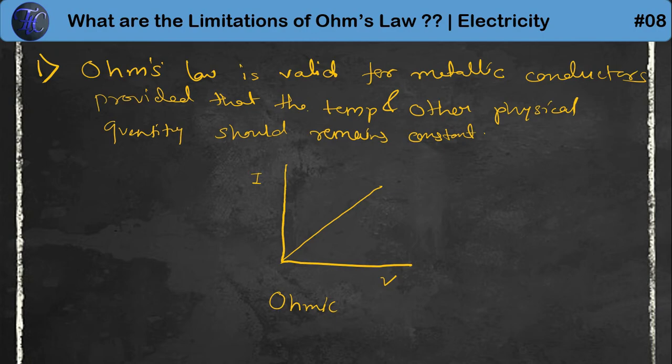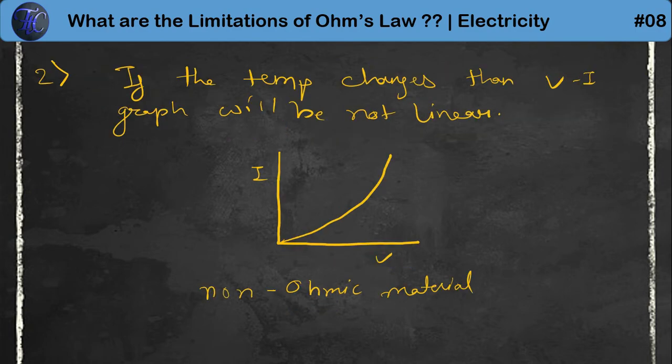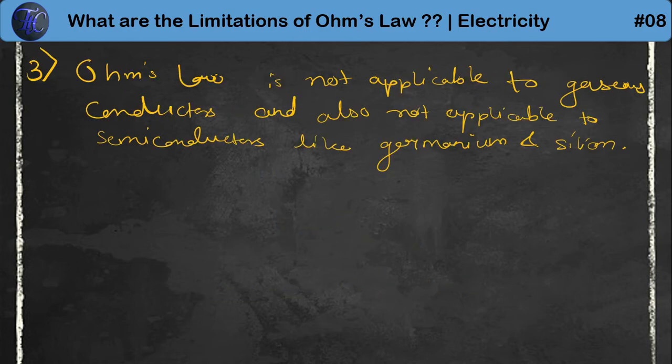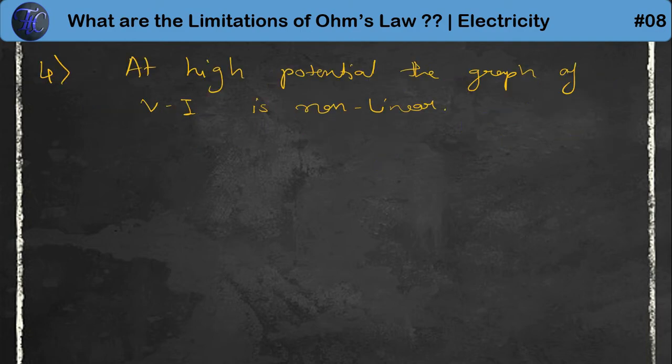Let us do a short recap. First, Ohm's Law is valid for metallic conductors provided that temperature and other physical quantities remain constant. Second, if the temperature changes, the V versus I graph will not be linear. Third, Ohm's Law is not applicable to gaseous conductors and semiconductors like germanium and silicon. Fourth, at high potential, the graph of V versus I is non-linear.